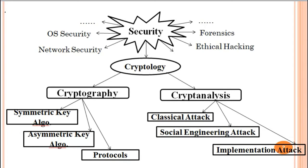Cryptanalysis is further classified into three categories. First is classical attack, also called brute force attack or hit and try. Second is social engineering attack, which is the art of manipulating people. Third is implementation attack, which is a modern attack.